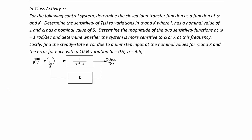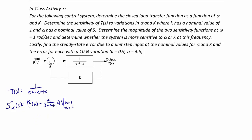First, let's find the closed loop transfer function. T(S) is equal to 1 over (S plus alpha plus k). The sensitivity function for the closed loop transfer function with respect to k is k over 1 times 0 minus k over (S plus alpha plus k) times 1, evaluated at k equal to 1 and alpha equal to 5, giving negative 1 over (S plus 6). The magnitude at 1 radian per second is 0.164, or negative 15.7 decibels.